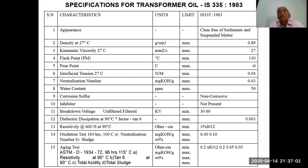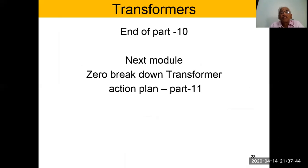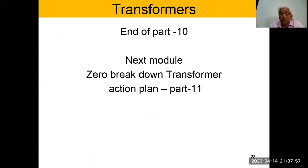A list of specifications for transformer oil is given as per IS 1983. Salient points include: appearance — clear, free of sediments and suspended particles; density at 27°C in grams per cubic centimeter; kinematic viscosity; pour point recommended at minus 6°C maximum; interfacial tension at 0.04 N/m; neutralization number at 0.03 mg KOH per gram; and water content at about 50 ppm. This concludes the presentation. The next module will cover the breakdown action plan for a transformer. Thank you very much.